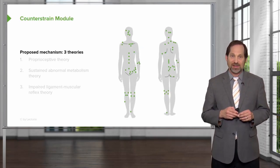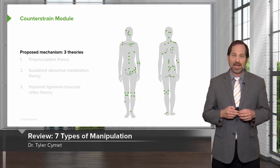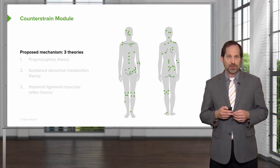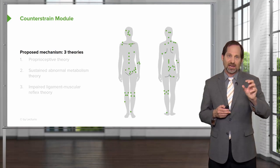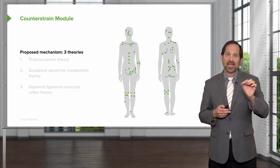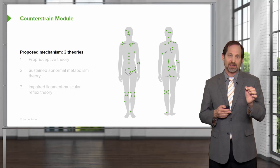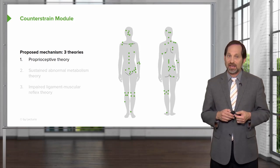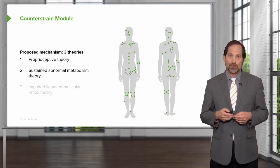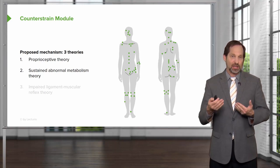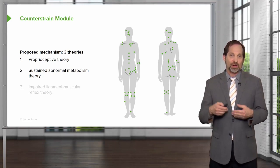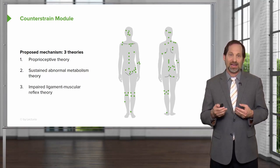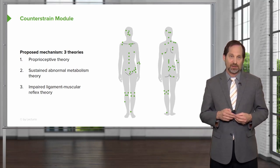A brief review of each of the seven types of manipulation. The first is counterstrain started by Larry Jones, a matter of spontaneous release by positioning. You hold the body and find an area where there's a tender point and hold it for 90 seconds until it's released. We don't know if it's working because of a proprioceptive theory where you're resetting the gamma gain system, whether it's sustained abnormal metabolism that helps the body pay attention to where the issues are, or whether it's fixing an impaired ligament muscular reflex where the body needs some guidance.